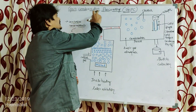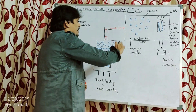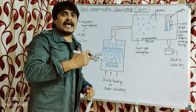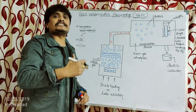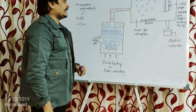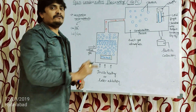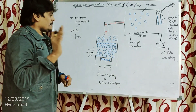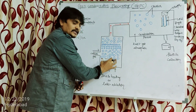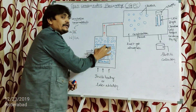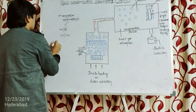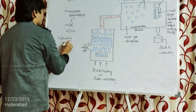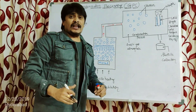This is the equipment required for carrying out gas condensation processing — the equipment by which we can convert the metal, which is the precursor, into composite nanomaterials. This is the schematic diagram of the equipment required for this particular method.